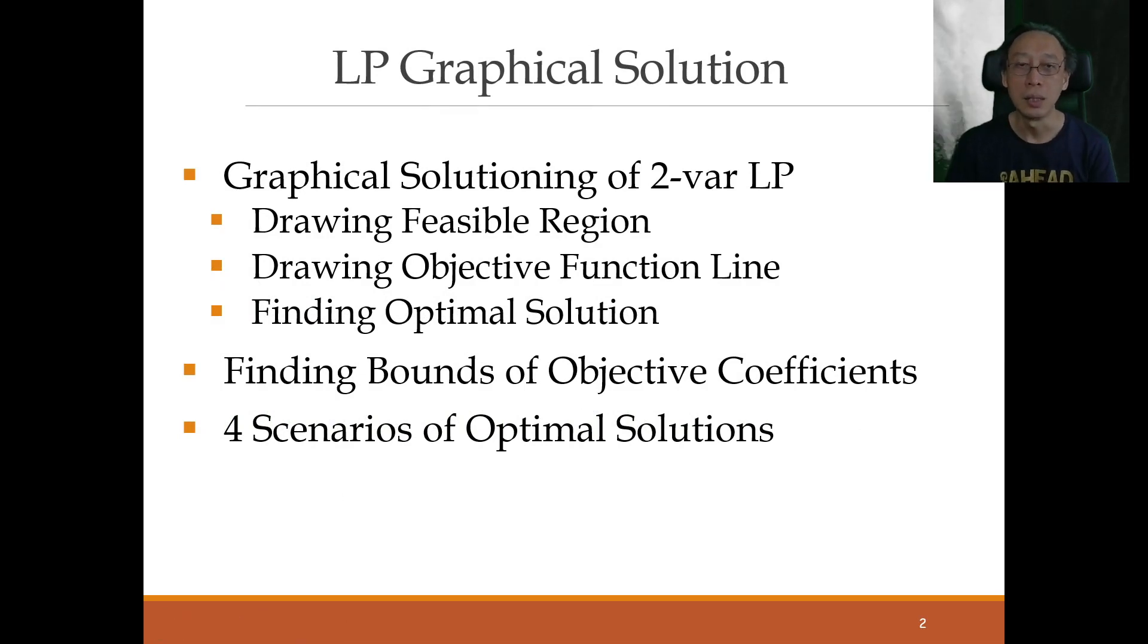And the agenda today is really simple, three points. We're going to learn how to actually draw out the visible rendition of the LP model based on two variable LP models, only two variables. One variable is too simple, three or more is just not possible to draw because we need four or five dimensions. So just two variable problems. We'll learn how to draw feasible region, draw the objective function line, and then subsequently find the optimal solution. So three steps in this graphical solutioning technique.